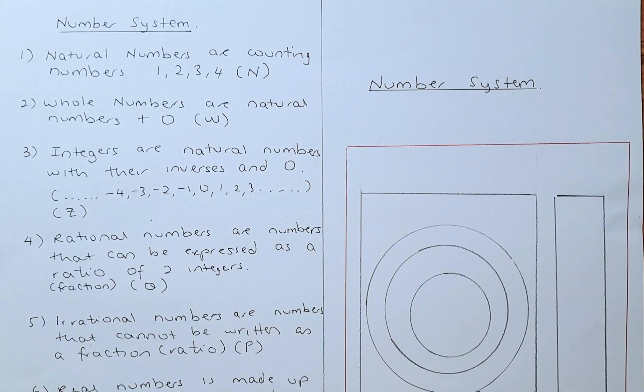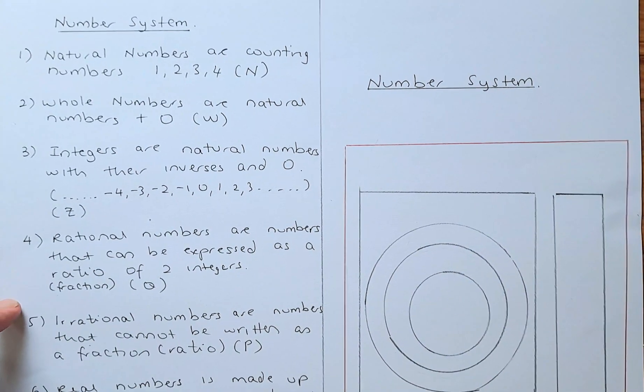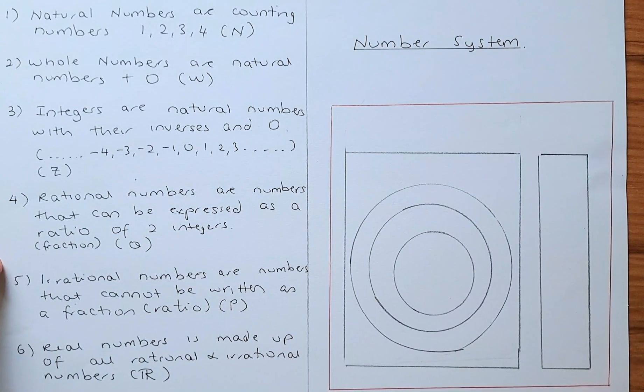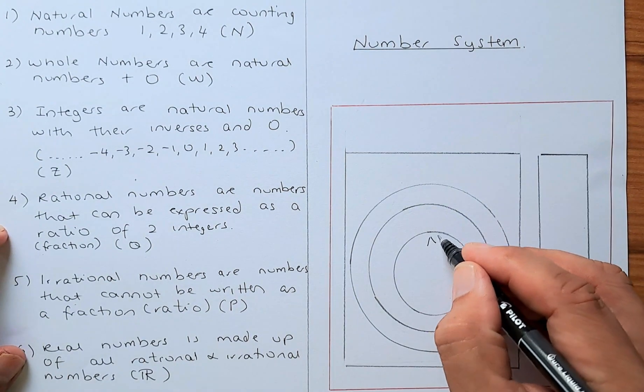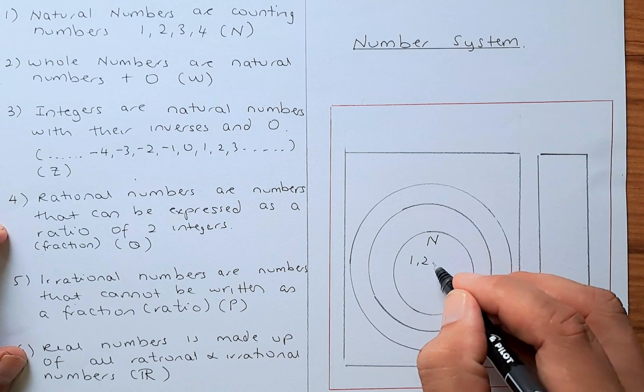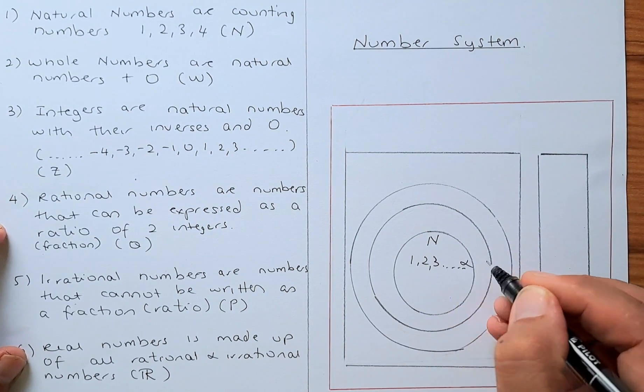We can represent in this diagram on the right what are natural numbers. Natural numbers can be represented with the letter N in the middle, and are represented by 1, 2, 3 and all the way to infinity.